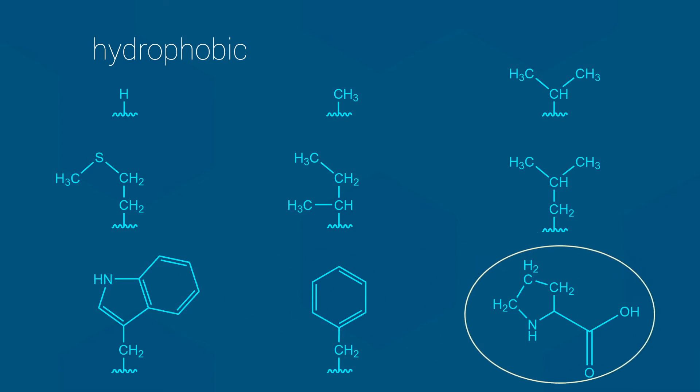Finally, proline's side chain is quite unusual. Here, the side chain loops back onto the amino acid and forms a covalent bond to the amino group. This has some serious implications for proline inside proteins, but that is not something we deal with here in Biology 112. You can simply treat proline as another hydrophobic amino acid.